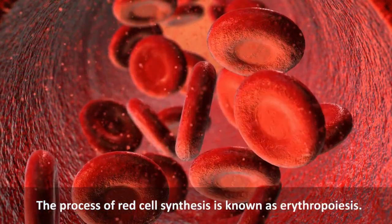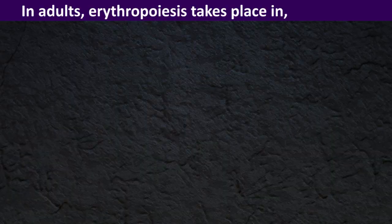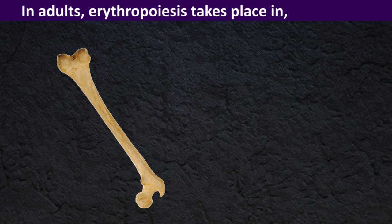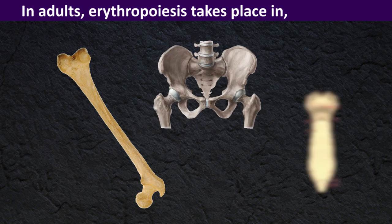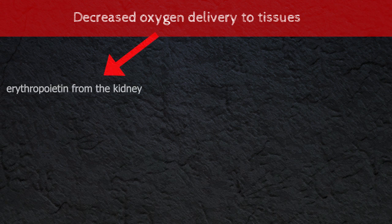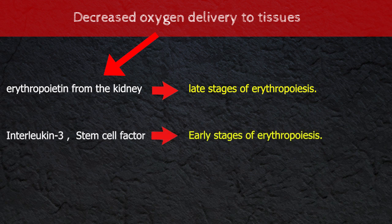Erythropoiesis: The process of red cell synthesis is known as erythropoiesis. In adults it takes place in sites like bone marrow of long bones, pelvis, and sternum. Decreased oxygen delivery to tissues stimulates secretion of erythropoietin from the kidney, which is a hormone that regulates late stages of erythropoiesis. The early stages are regulated by interleukin-3 and stem cell factor.